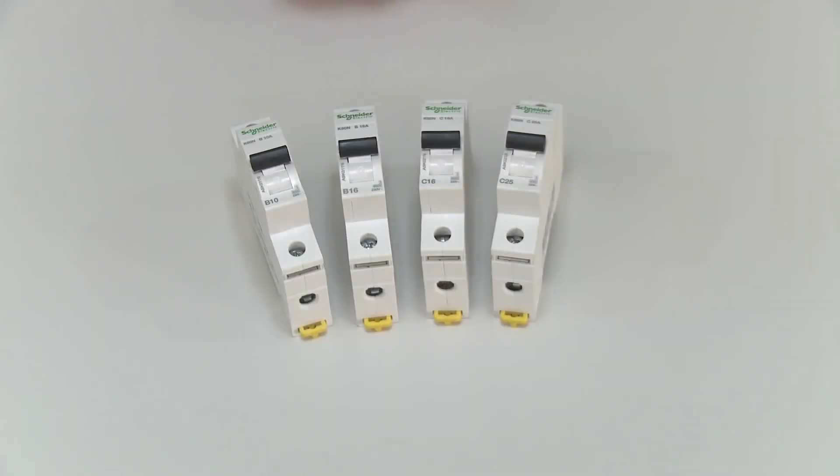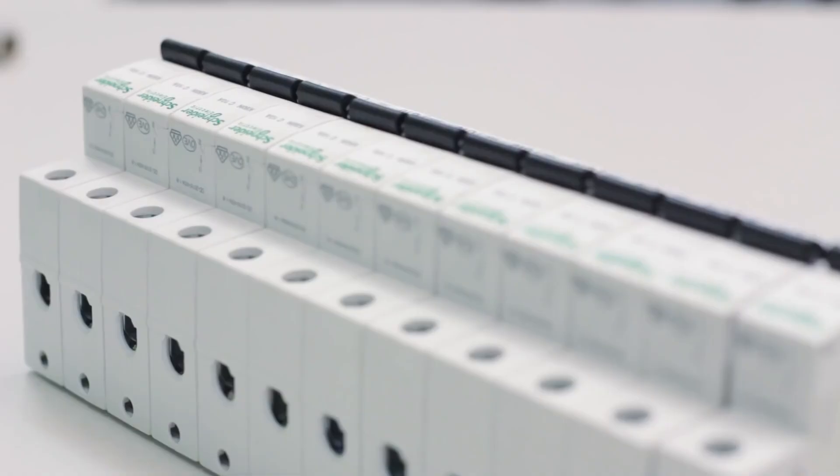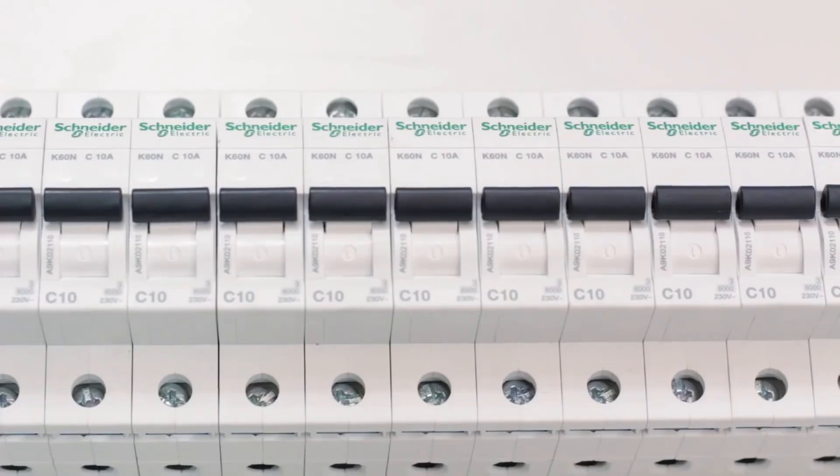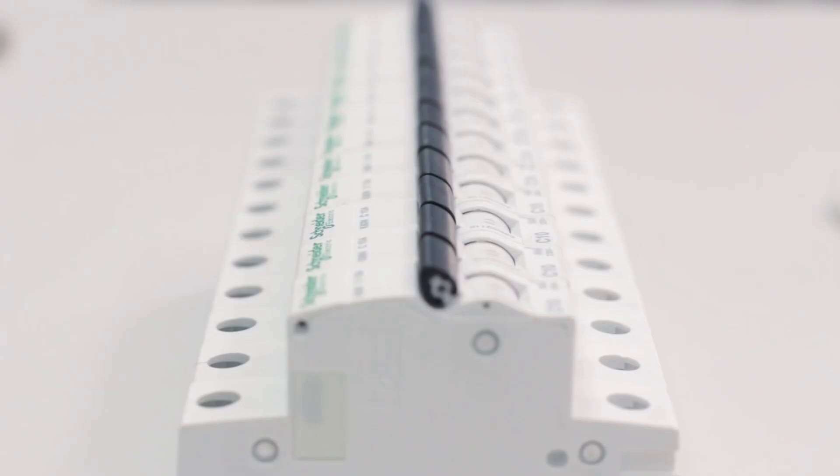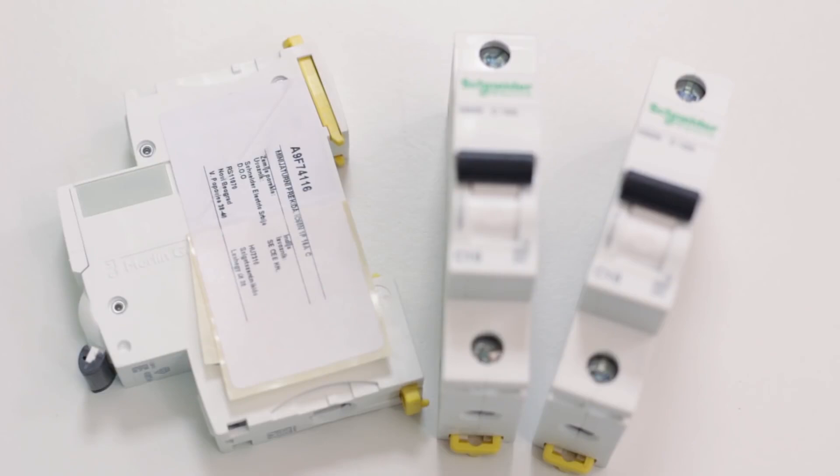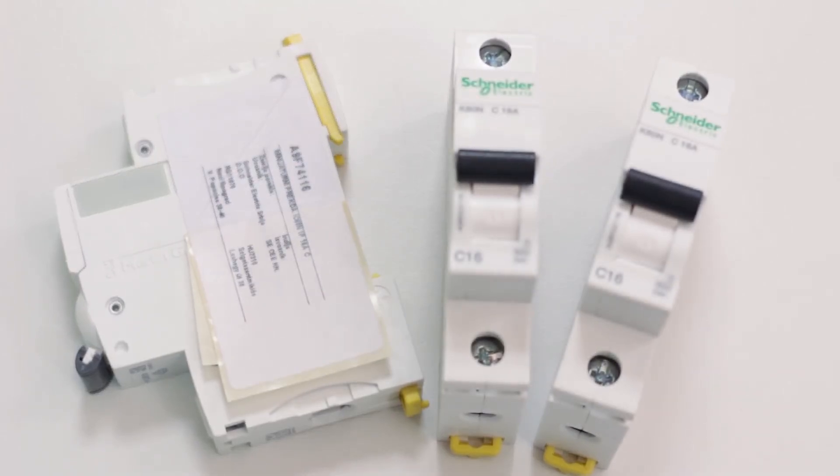The basic protection element in each modular enclosure is a circuit breaker. The basic characteristic of each circuit breaker is its rated current at which it should switch off or interrupt the circuit. Circuit breakers protect installations or conductors from excessive current that can occur as a result of a short circuit or as a result of overload.